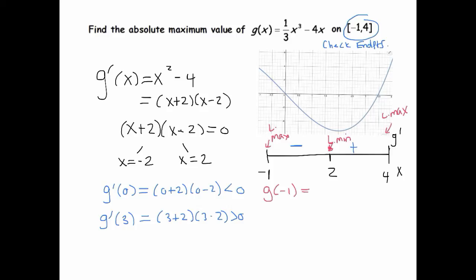So let's plug in negative 1. 1 third, negative 1 cubed, minus 4 times negative 1, gives me, negative 1 cubed is negative 1, so it's negative 1 third plus 4, which is 3 and 2 thirds.